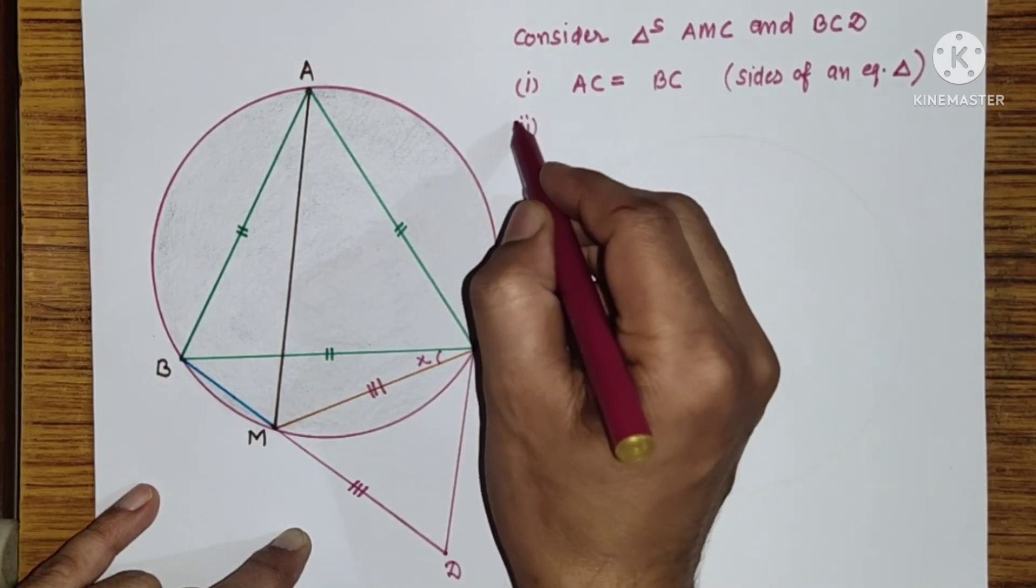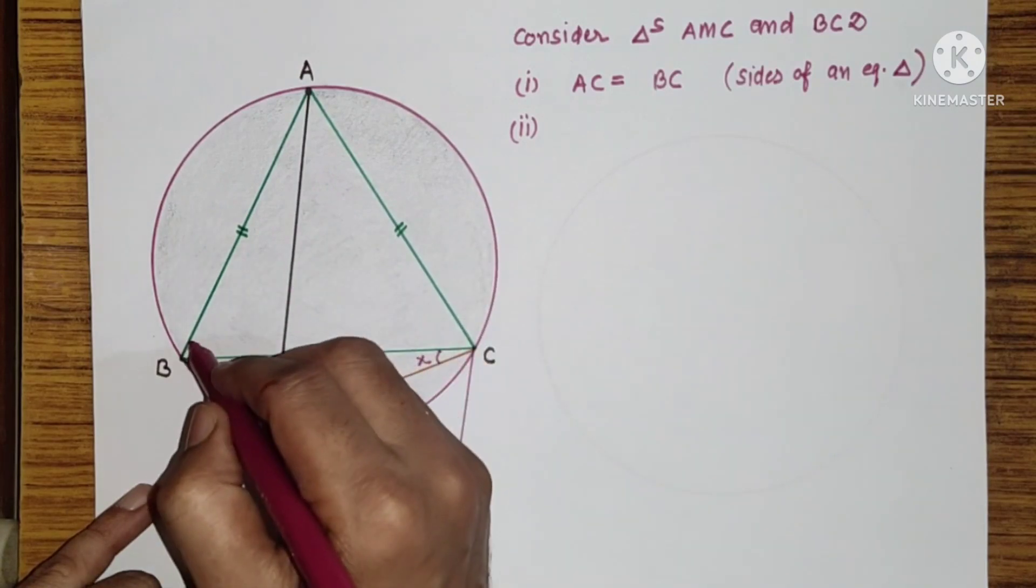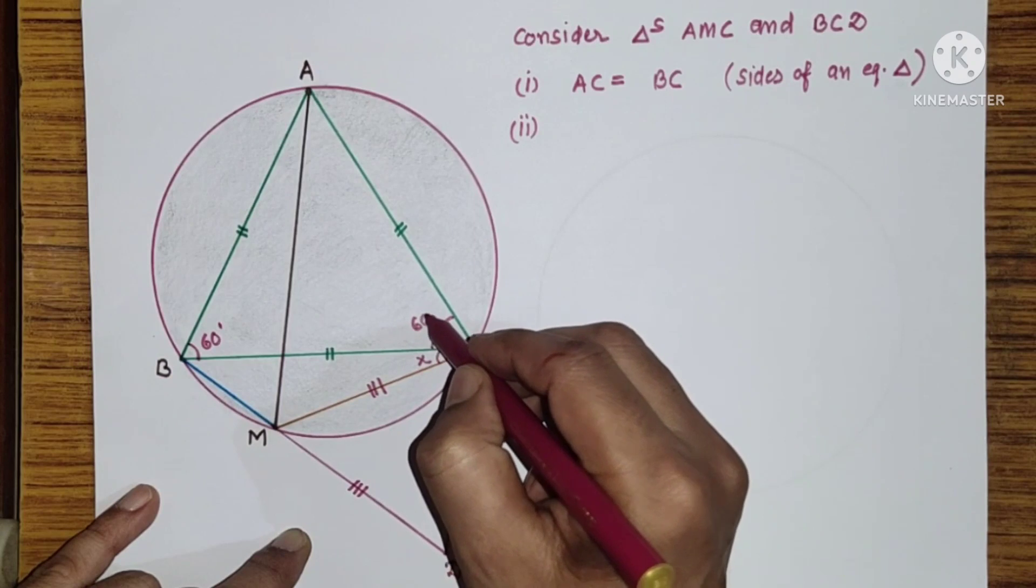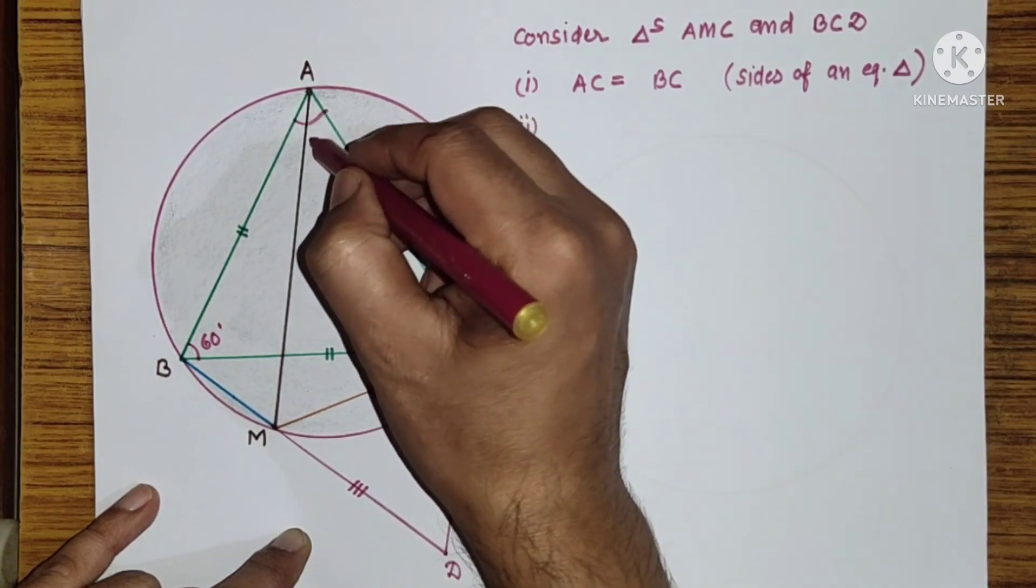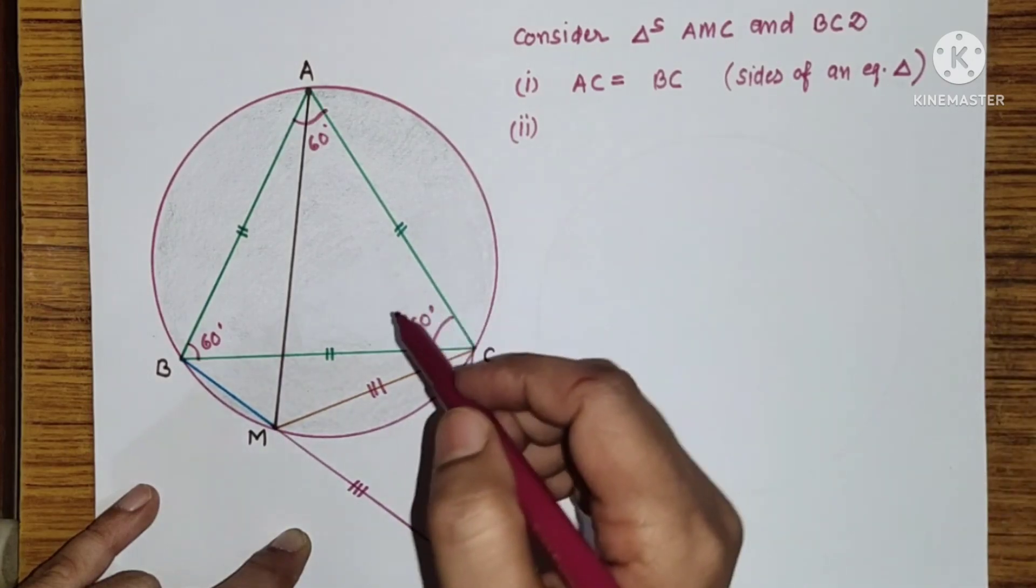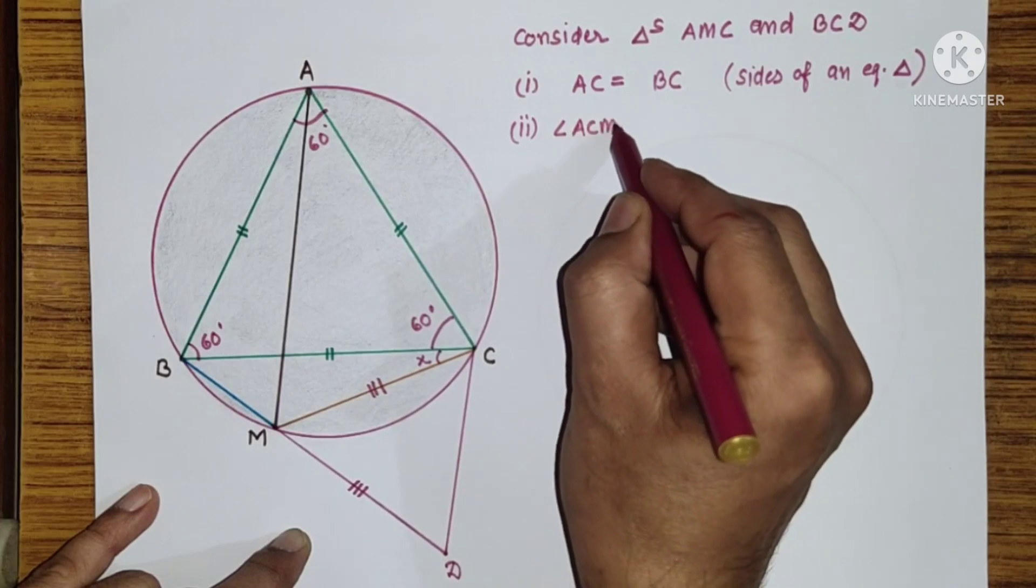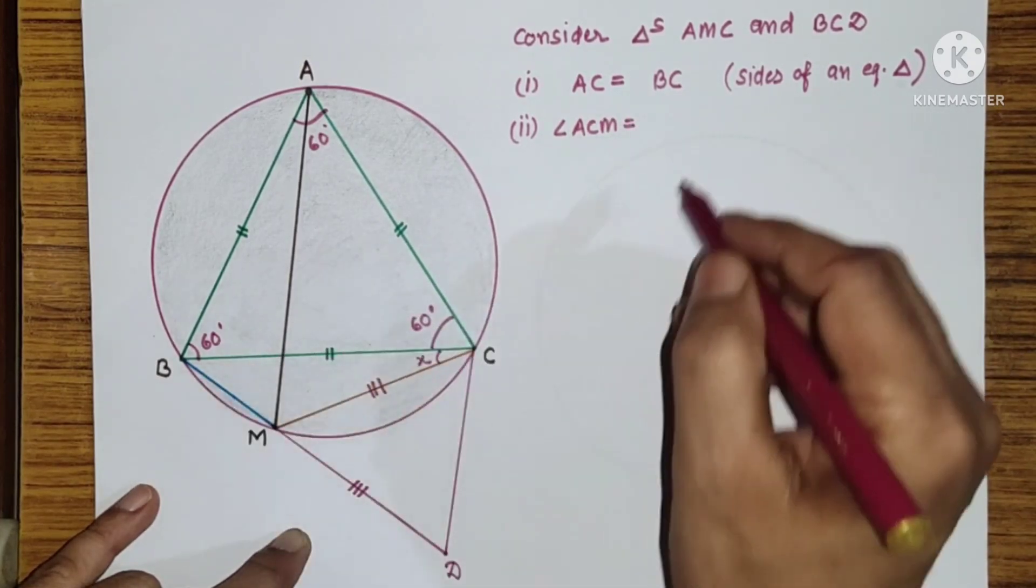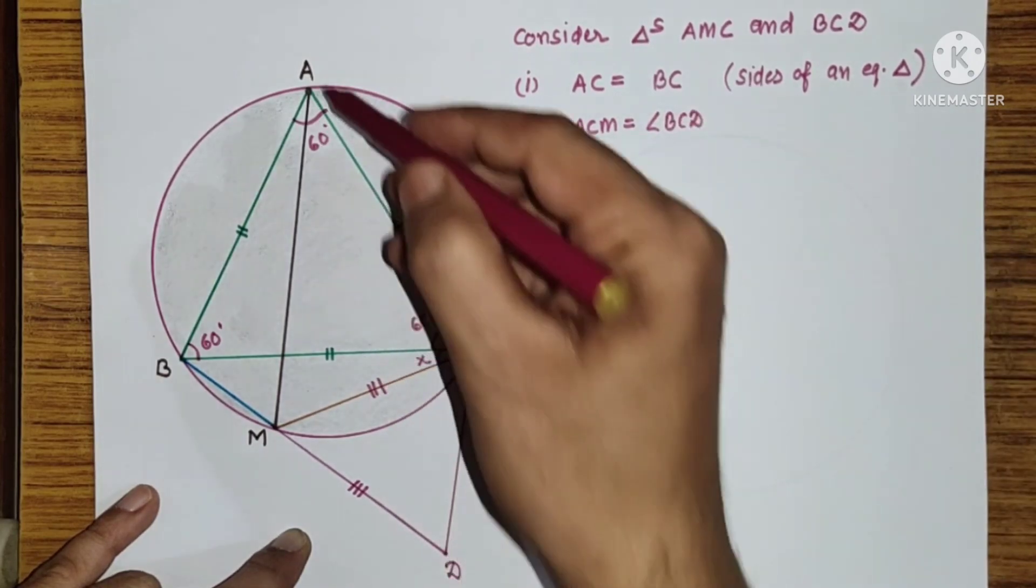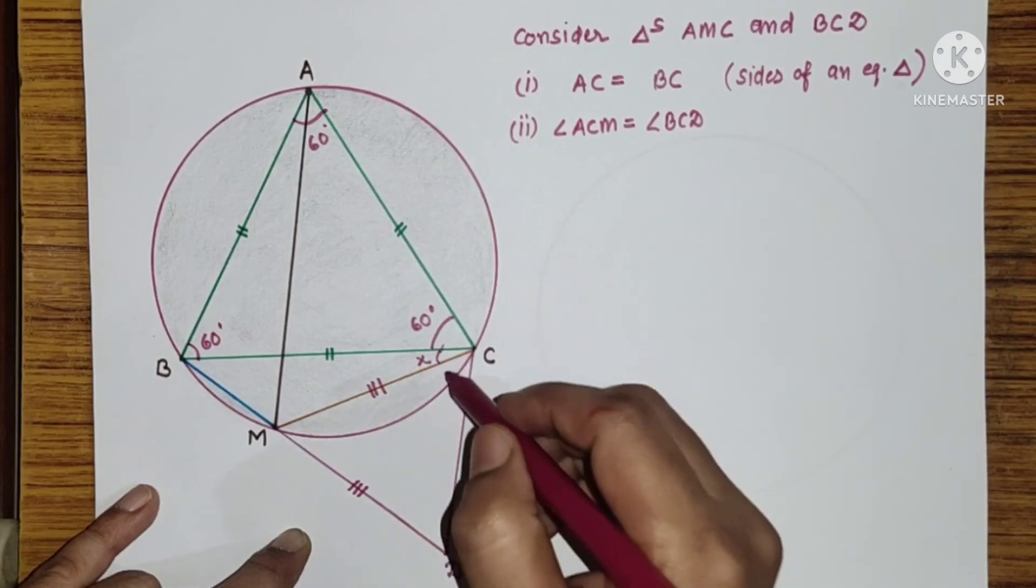And second point, since the triangle ABC is an equilateral triangle, each angle will be 60 degrees. So, angle ACM is equal to angle BCD because ACM is equal to 60 plus X and BCD is equal to X plus 60.